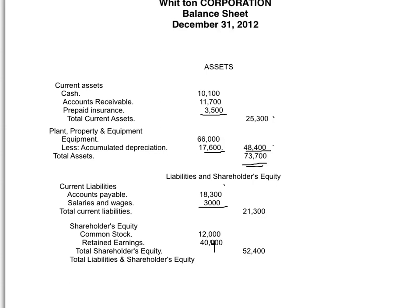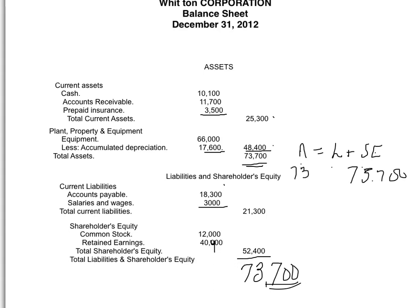Liabilities are $21,300 and when we total liabilities and shareholders' equity we get $73,700, which we double underline. So total assets equal $73,700, and liabilities plus shareholders' equity also equal $73,700. Assets equal liabilities plus shareholders' equity — this is the balance sheet equation. We will use this equation when we next look at how to analyze and record transactions.